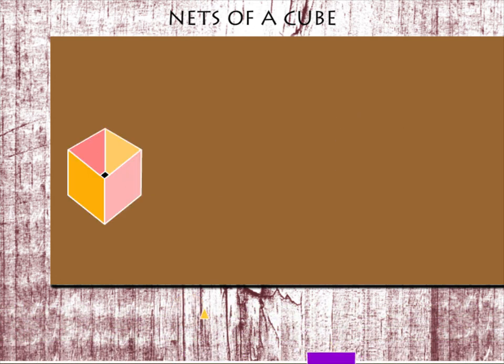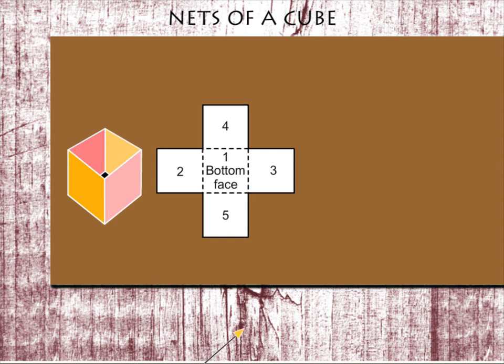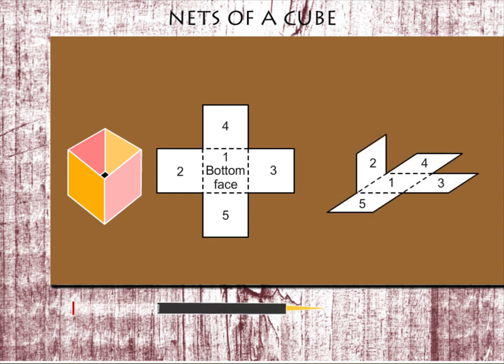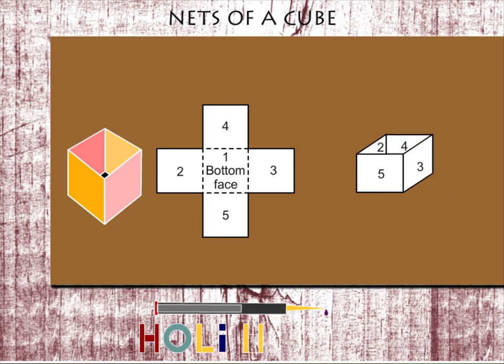Here it is. If we add the bottom face and number the sides, they will be 1, 2, 3, 4, and 5. Here, look how these fold up to make the cube.